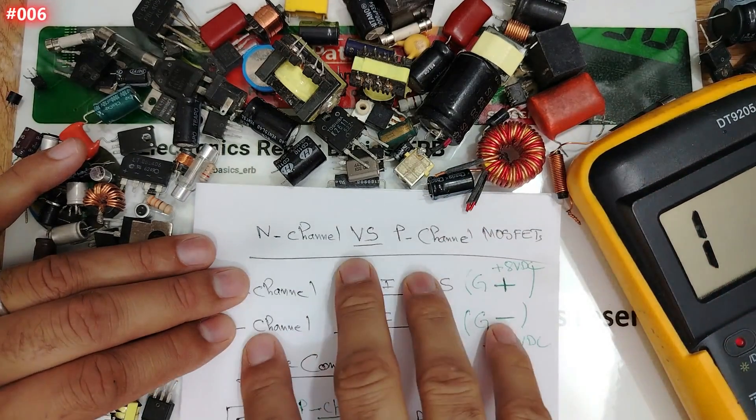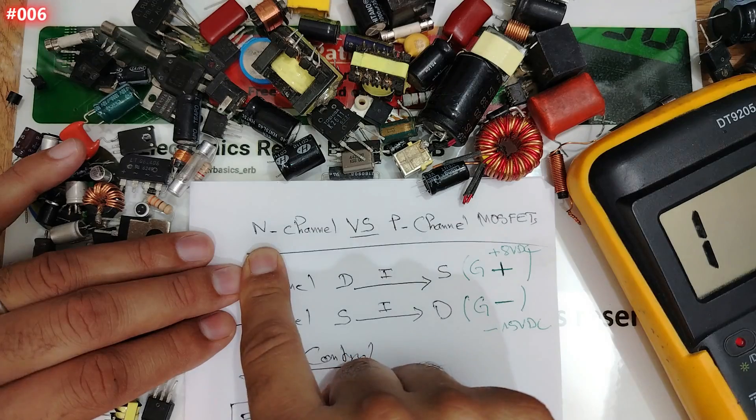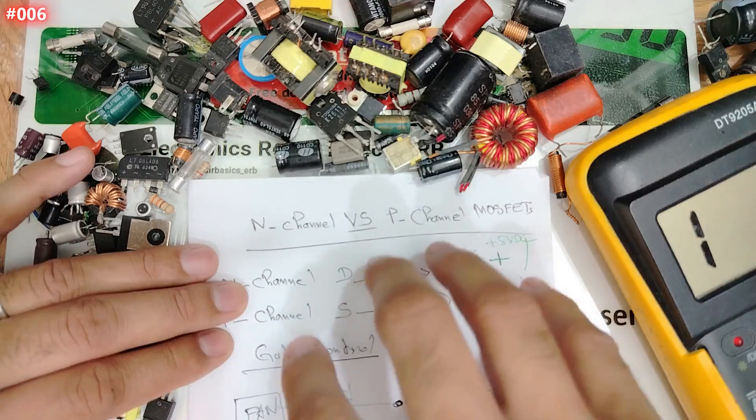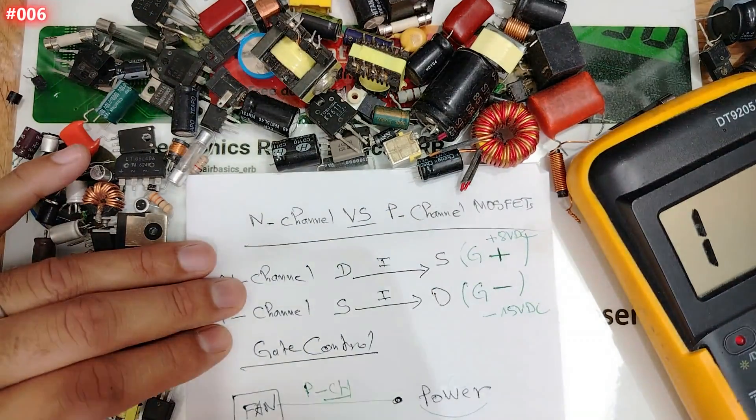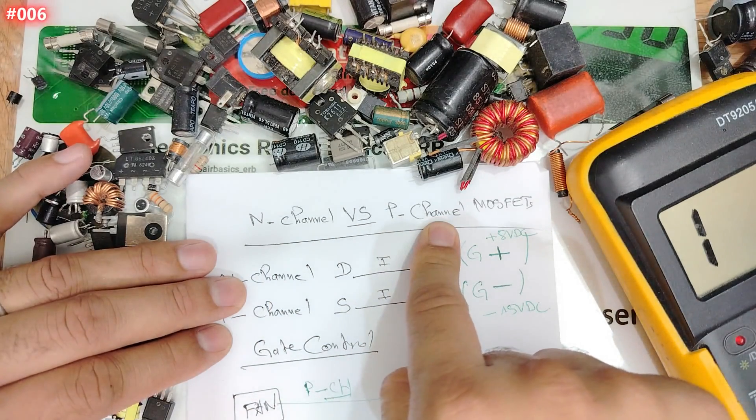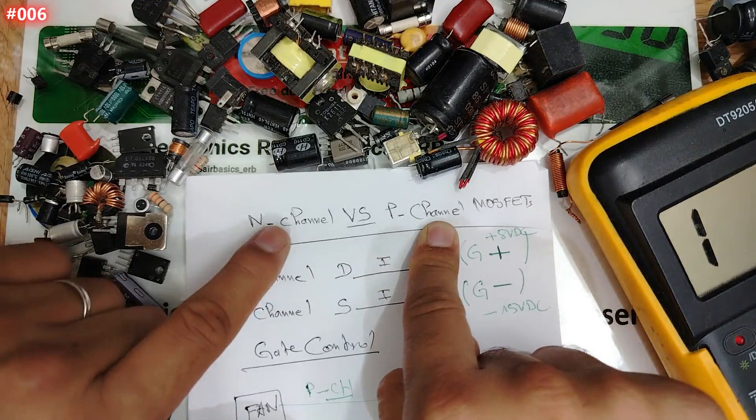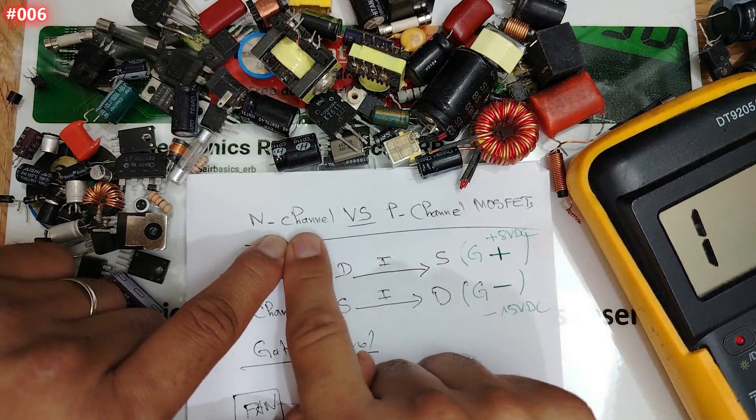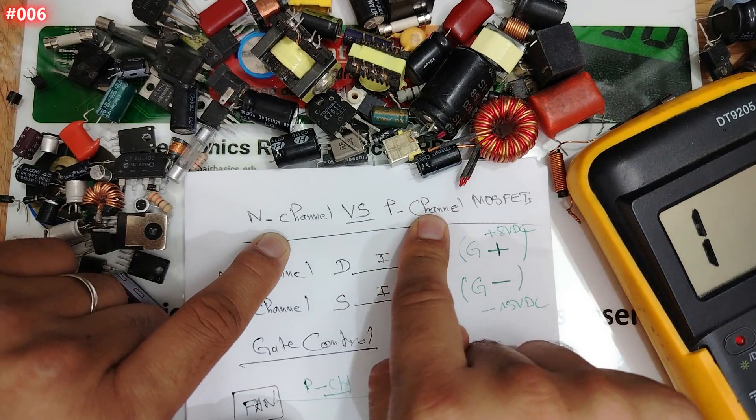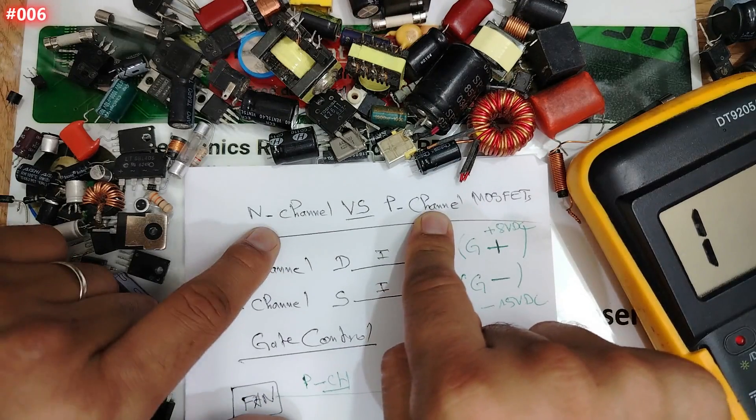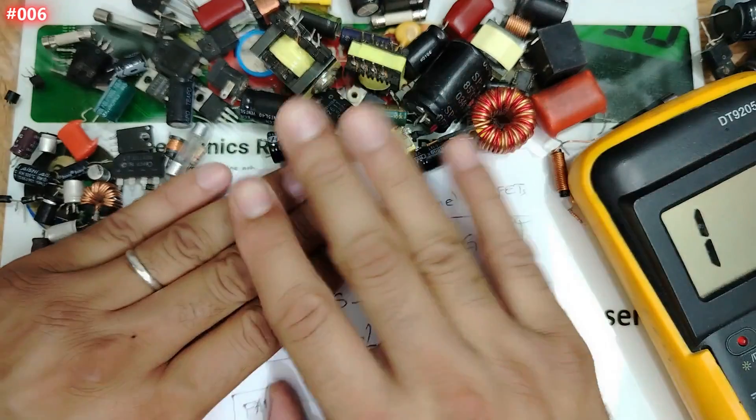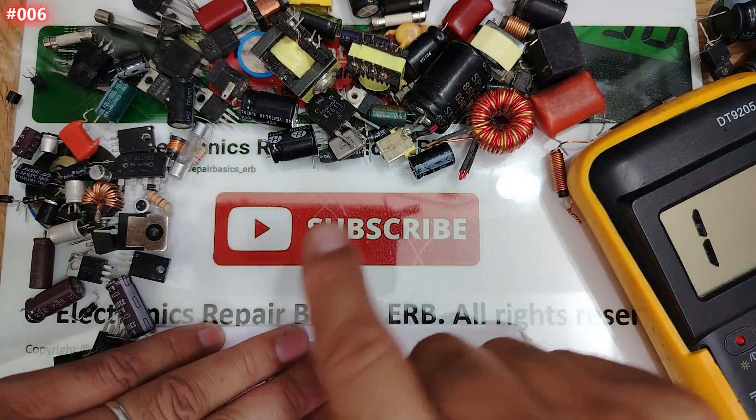And of course, I cannot pass without explaining for you N-channel and P-channel because the most important when it comes to MOSFET is understanding the difference between N-channel and P-channel MOSFET. And guys, please, for example, if you find a failed N-channel MOSFET, never replace it with a P-channel or P-channel replace it with N-channel. If you do so, you will damage the control IC.